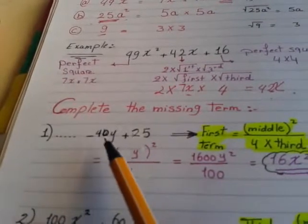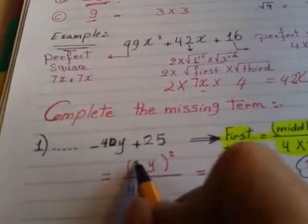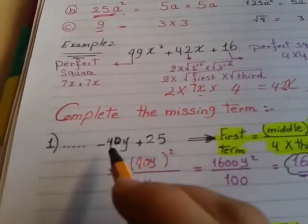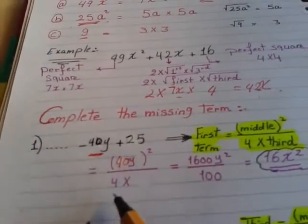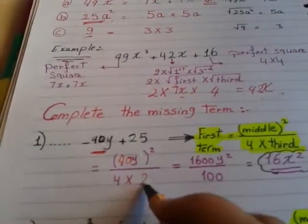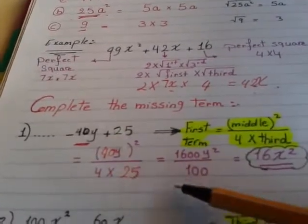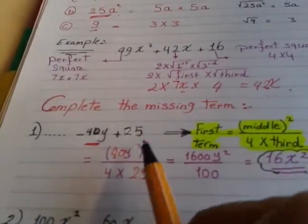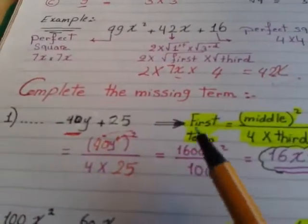So the rule is the middle squared, which is 40 squared, 40Y all to the power 2. Here the middle term is 40Y. So 40Y all to the power 2 over 4 multiplied by the third. The third is 25. You can get it on the calculator direct, but don't forget Y². So I prefer to distribute the power over 40 and over Y.